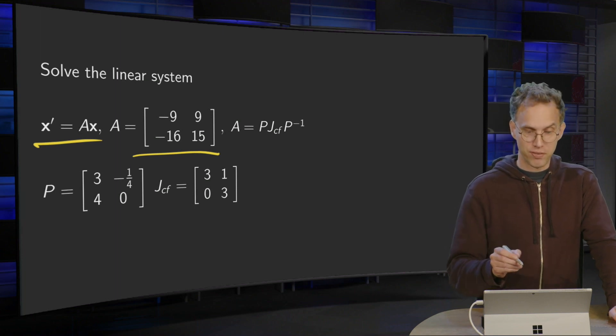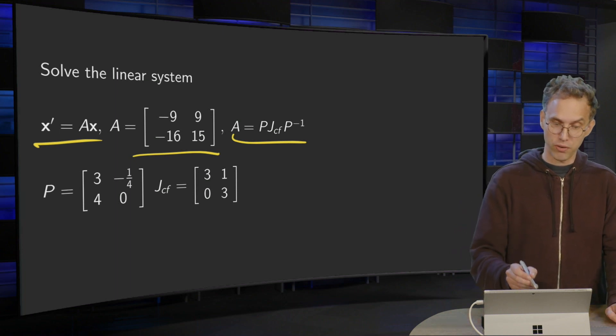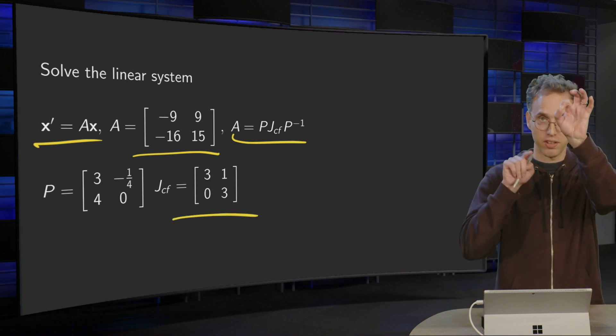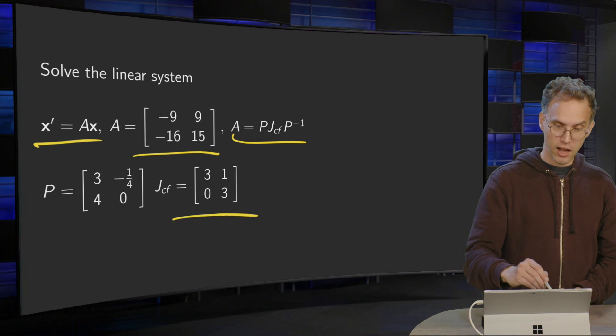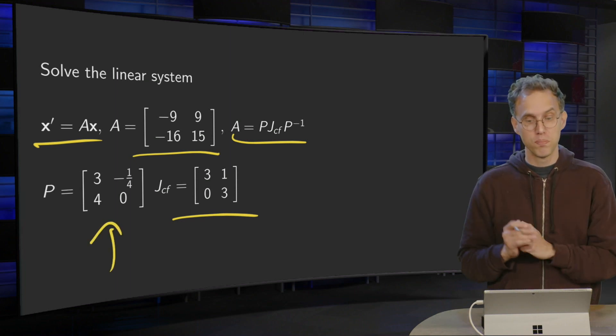And in a previous video, we saw that A is similar to a Jordan canonical form over here, 3, 3 and a 1, with the following P. So A equals P times J times P inverse.